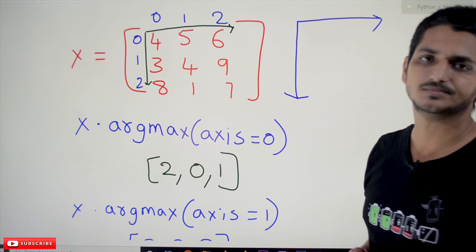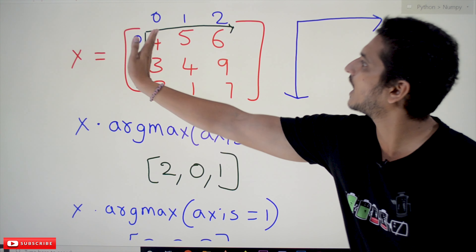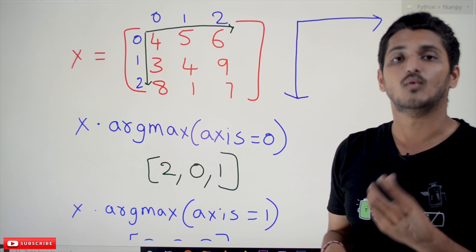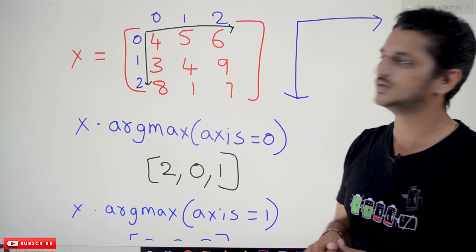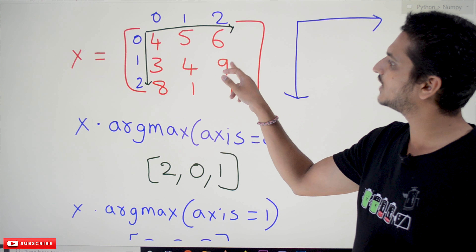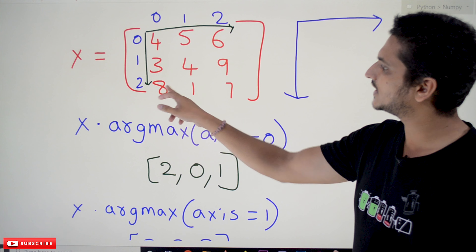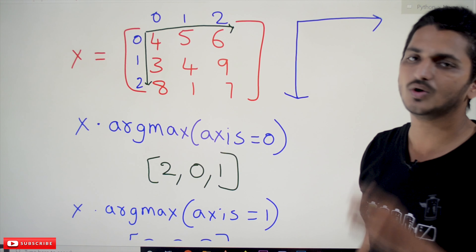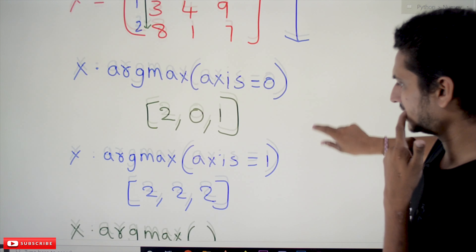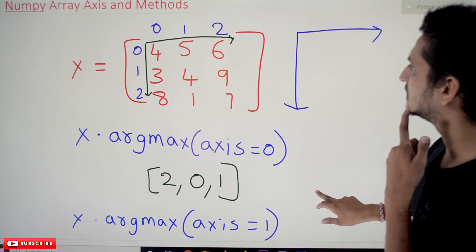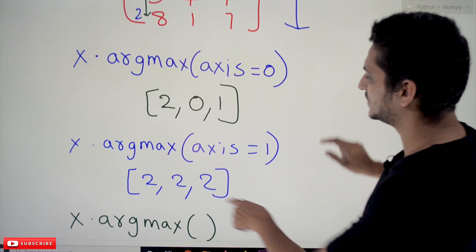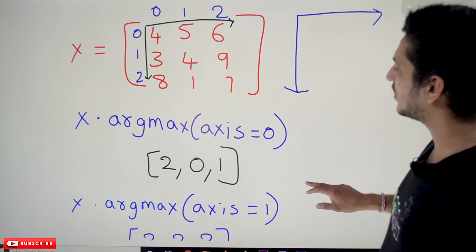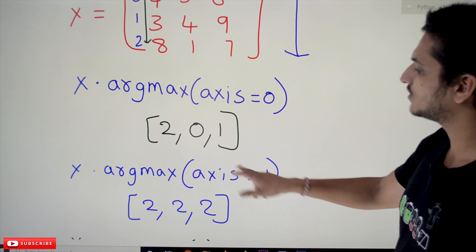Axis=1 means it will apply in this direction — on the row side. For row [4, 5, 6], the maximum is 6 and the index is 2. For [3, 4, 9], the maximum is 9 and the index is 2. For [8, 1, 7], the maximum is 8 and the index is 0 — note we had a mistake in a previous slide writing 2; the correct answer is 0. So the axis=1 output is [2, 2, 0].